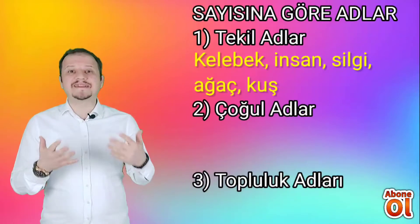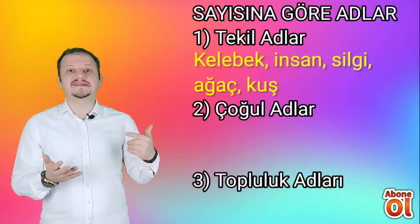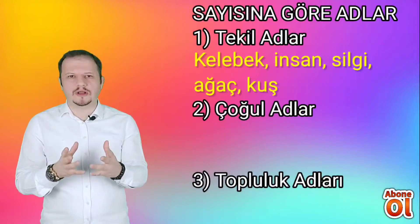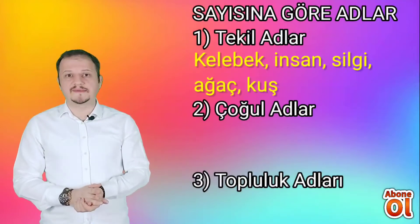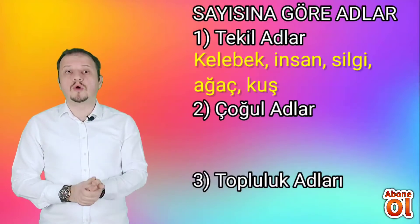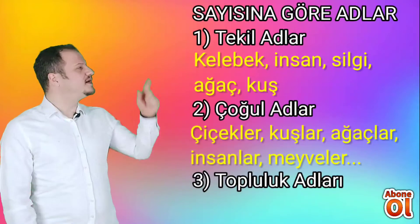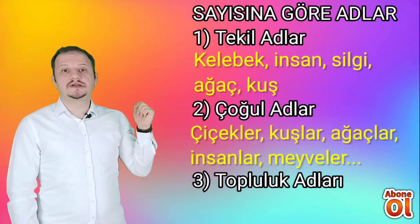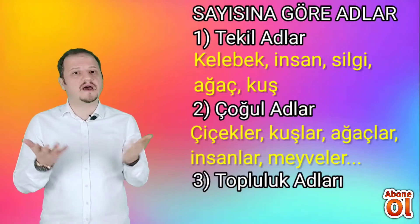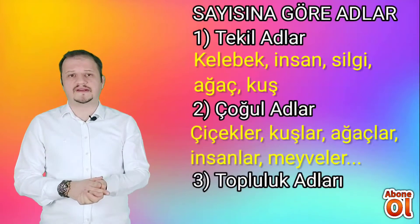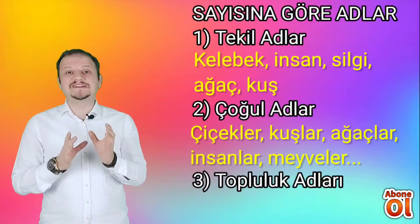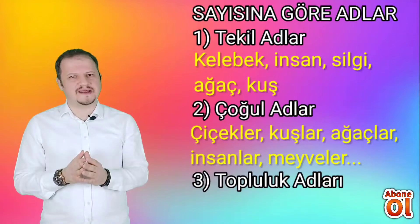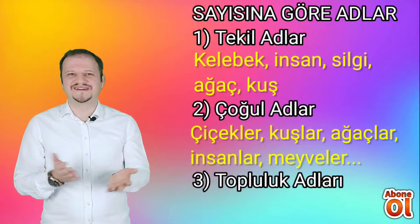Çoğul adlar, o varlıktan birden fazla, bir sayısından fazla miktarda olan varlıkları adlandırdığımız zamandır. Örnek vermek gerekirse: çiçekler, kuşlar, ağaçlar, insanlar, meyveler. Çoğul adlar ismin sonuna -ler, -lar ekleri getirilerek çoğaltılırlar.